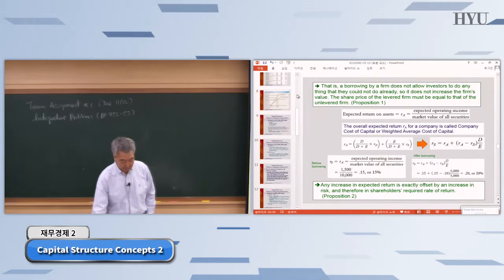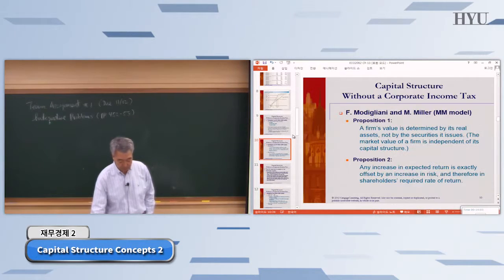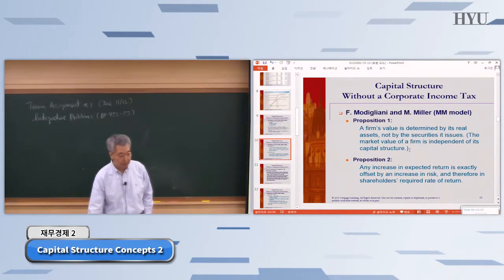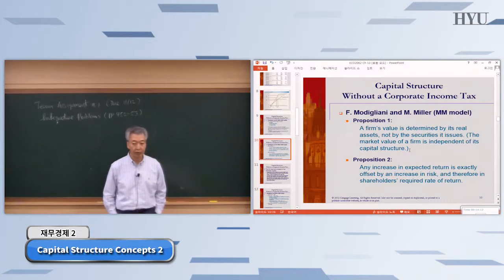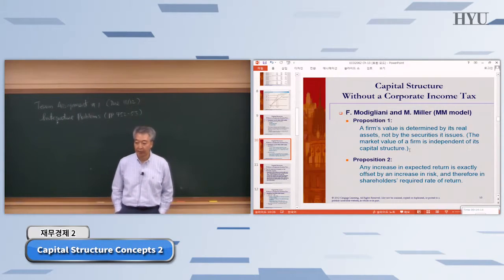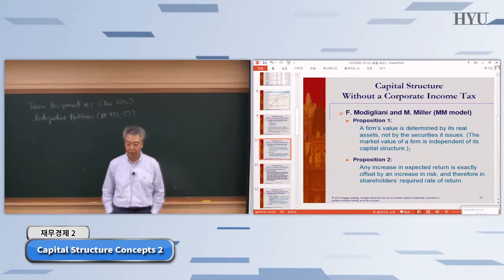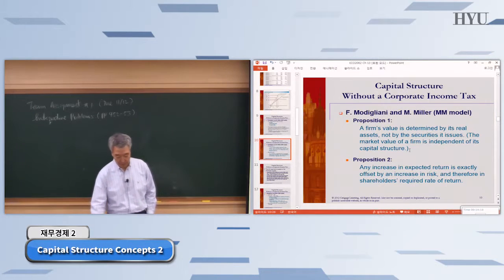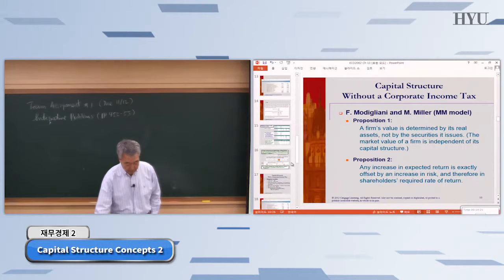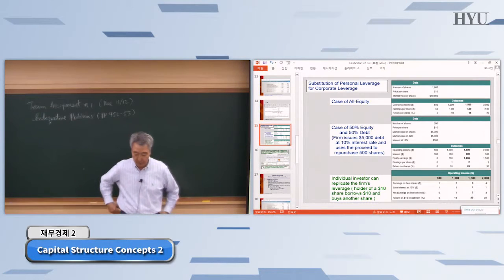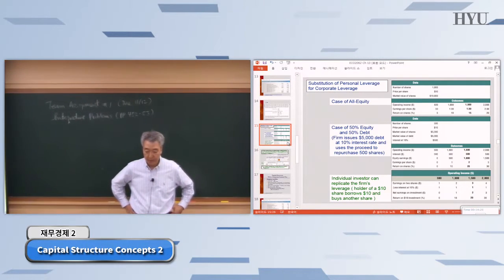That was proposition one. The market value of a firm is independent of its capital structure — the company's debt-equity ratio doesn't make any difference to the market value of the company. This explains the arbitrage theory.